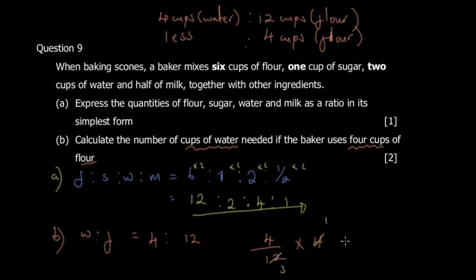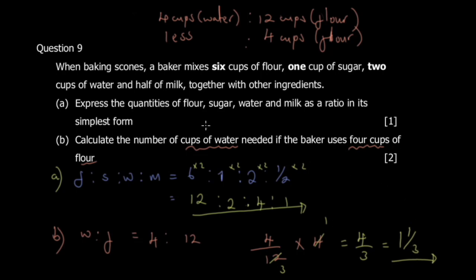Simplifying: 4/12 × 4 = 4/3, which equals 1 and one-third cups of water. That's your answer for part b — 1⅓ cups of water are needed. If you use rough paper, make sure to attach it to avoid confusion. Let's move to question ten.